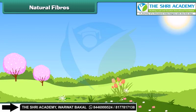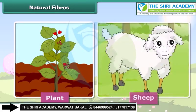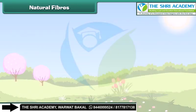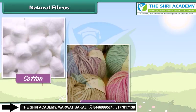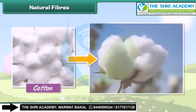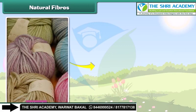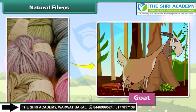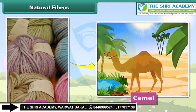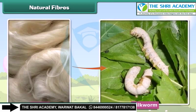Natural fibers are made from plants and animals. Some natural fibers are cotton, wool and silk. Cotton is obtained from plants, wool is obtained from sheep, goats and camels, and silk is obtained from silkworms.